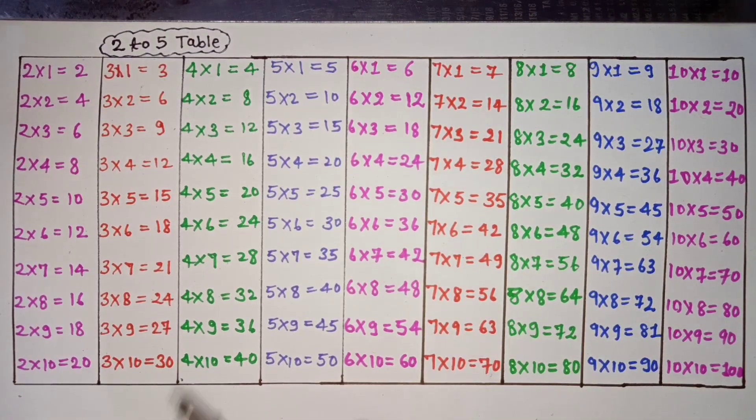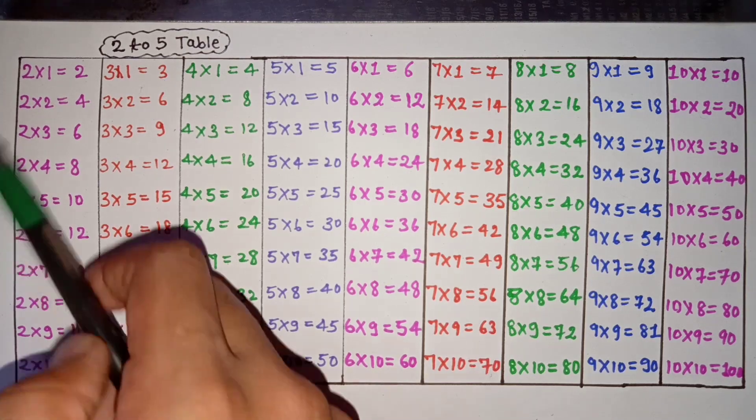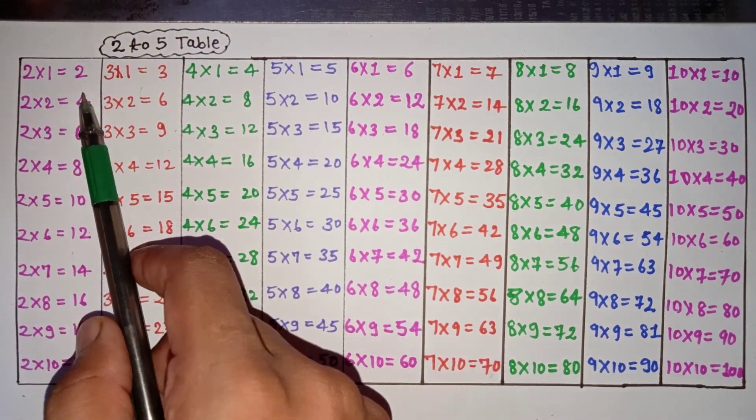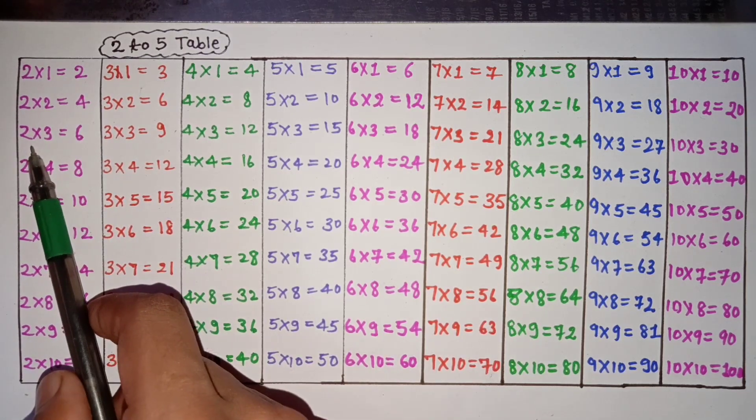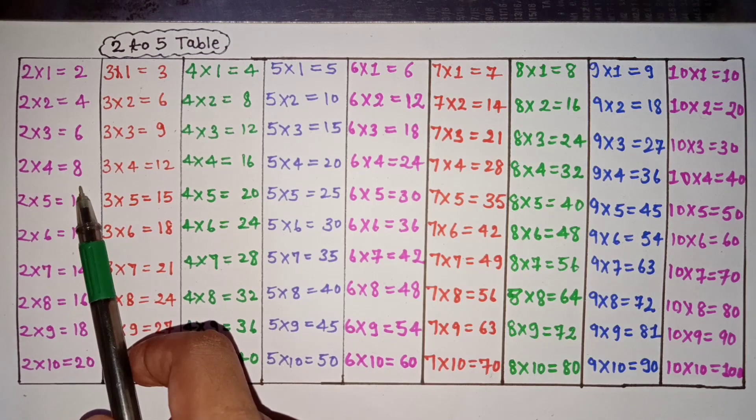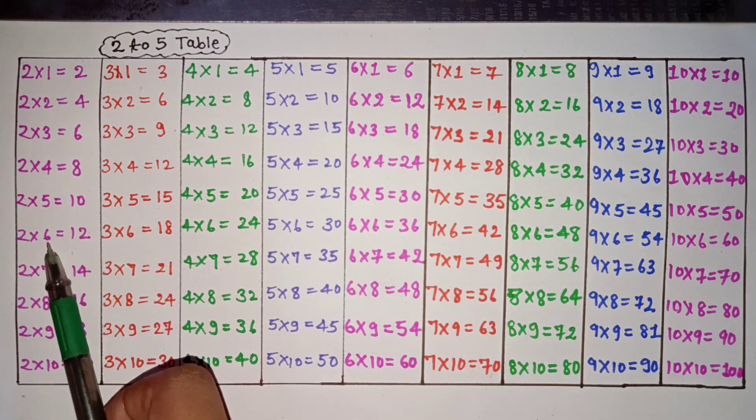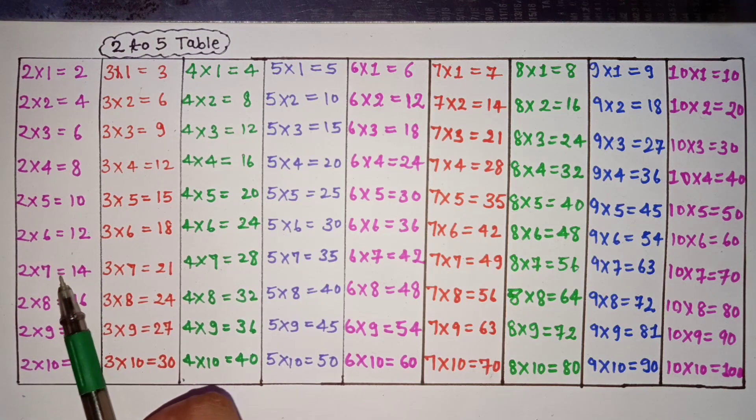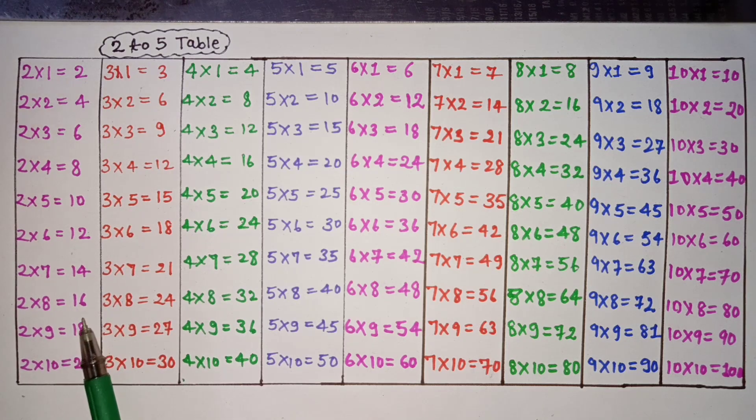2 to 10 table in English. 2 ones are 2, 2 twos are 4, 2 threes are 6, 2 fours are 8, 2 fives are 10, 2 sixes are 12, 2 sevens are 14, 2 eights are 16, 2 nines are 18, 2 tens are 20.